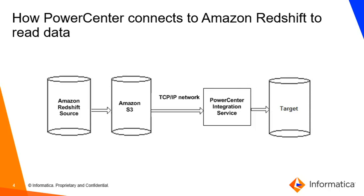Now let's see how PowerCenter connects to Amazon Redshift to read the data. The PowerCenter integration service uses the Amazon Redshift connection to connect to the Amazon Redshift source. When you run the Amazon Redshift session, the PowerCenter integration service reads the data from the Amazon Redshift source. Based on the workflow and Amazon Redshift connection configuration, the integration service connects and reads the data from Amazon S3 — Amazon Simple Storage Service — through a TCP/IP network.